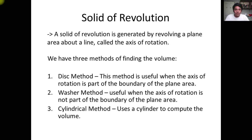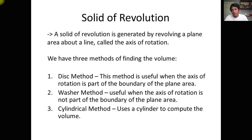We have three methods of finding the volume. Number one, we have the disk method. The disk method is useful when the axis of rotation is part of the boundary of the plane area. We have one curve, and it is bounded on a certain axis of the XY plane, so it is easier to use the disk method to find the volume of that plane area.